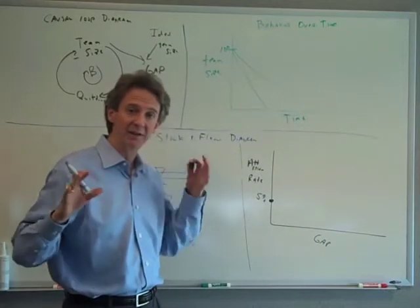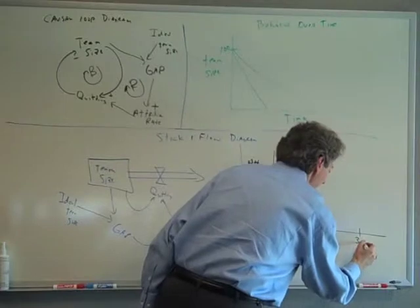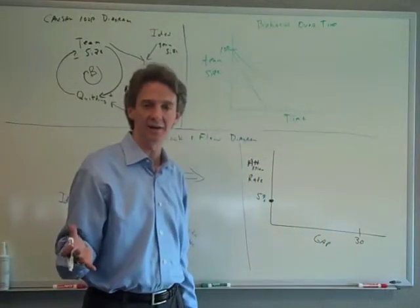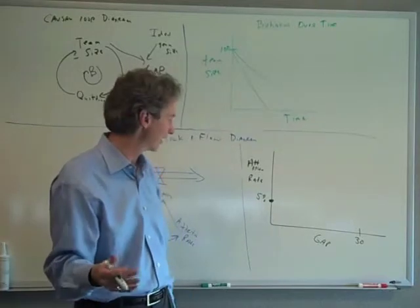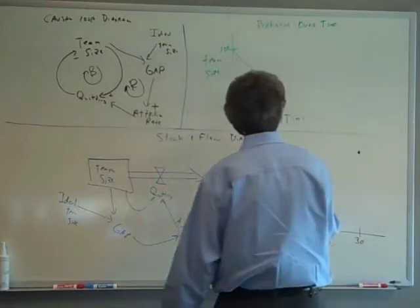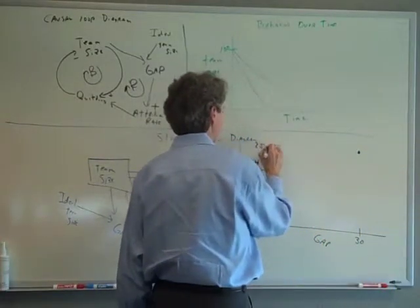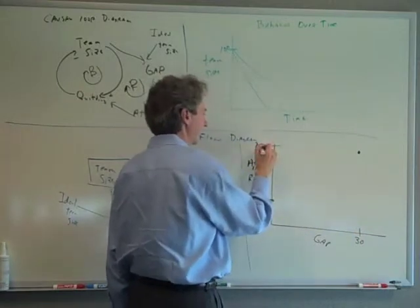Now let's say the gap is quite big. Let's say the gap is thirty. What would the attrition rate be at thirty? You can estimate something relatively large like twenty percent. This is what I'm going to do is estimate twenty percent is my second point. So when the gap is thirty, the attrition rate is going to be twenty percent.